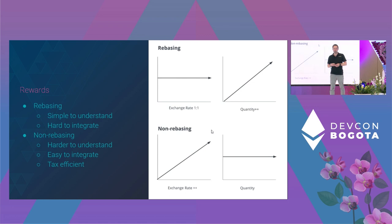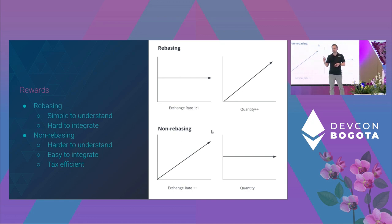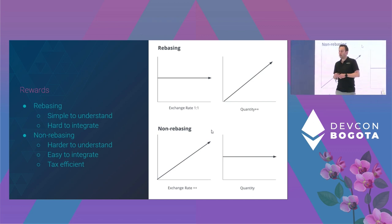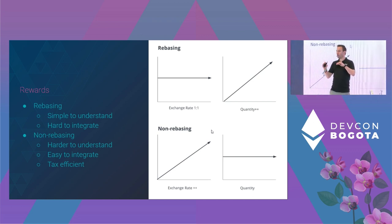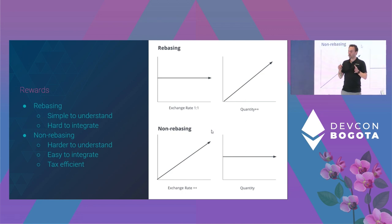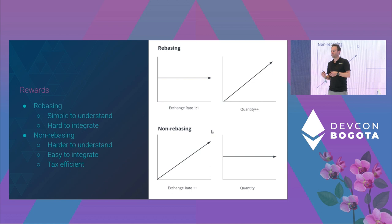So, rewards. How are rewards delivered to token holders? How does the token reflect the yield that the protocol is actually producing? Generally there are two approaches — rebasing and non-rebasing. A rebasing token has a notional one-to-one exchange rate with ETH, but the quantity increases over time. That's how the yield represents itself and gets delivered.